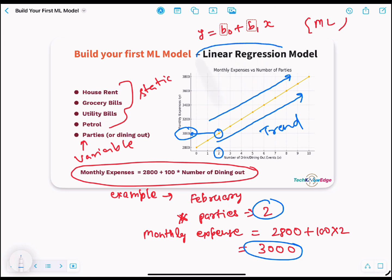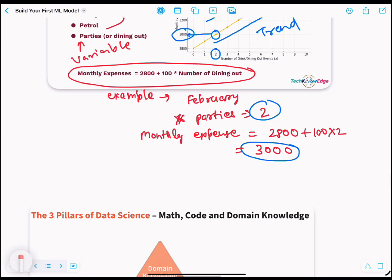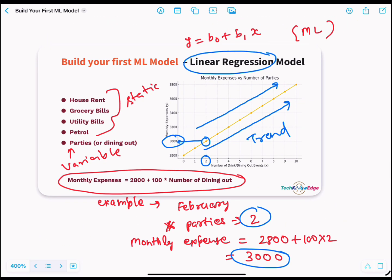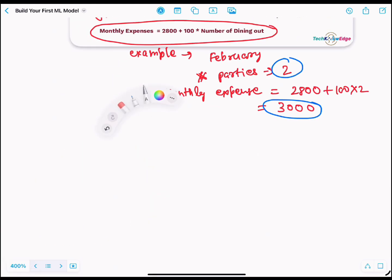But wait, why do I see regression here? You might ask, two data points are enough to draw a line, right? Yeah, that's true, but real world data is noisy and inconsistent. So regression helps find the best fit line across many data points, reducing error and making better predictions.